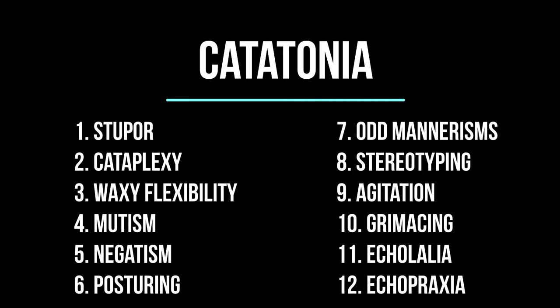Number three is waxy flexibility, which means having a resistance when someone tries to position you, even just a little bit. Let's say your arm is straight up in the air and a doctor or nurse comes over and just tries to take it down a little bit — you might have quite a resistance toward allowing that to come down. Number four is mutism, not being able to talk or give a verbal response when asked something. This isn't that the vocal cords aren't there; it's something psychological where they're not able to talk. Sometimes they talk, but only to certain people. Number five, negativism, means having no response or opposing a response to any form of instructions.